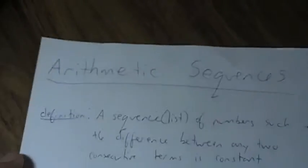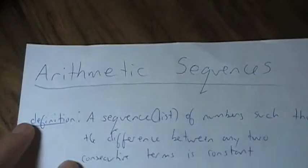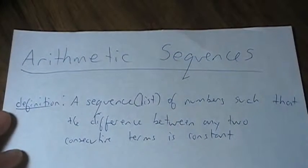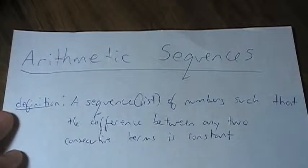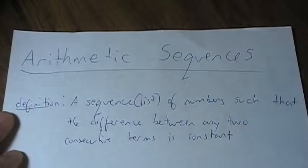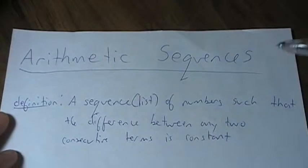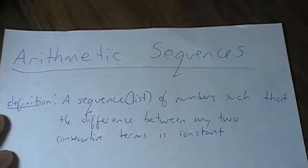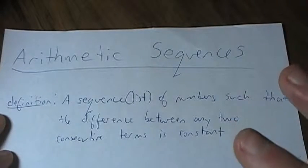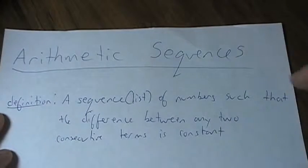Hello everyone, and welcome to a video on all you need to know about the arithmetic sequence. First, let's start with the definition. An arithmetic sequence is a sequence or list of numbers such that the difference between any two consecutive terms is constant.